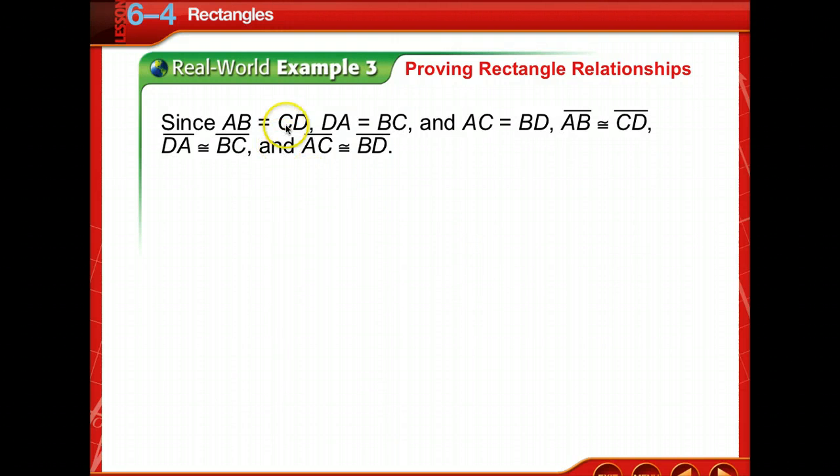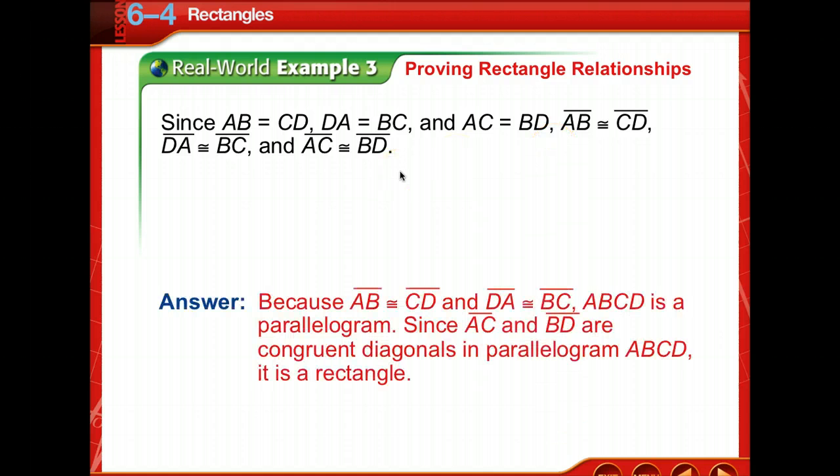Since AB equals CD, DA equals BC, and AC equals BD—meaning each set of sides are equal and the diagonals are equal—we can say those sides are congruent. Because they're congruent, ABCD is a parallelogram. Since AC and BD are congruent diagonals in parallelogram ABCD, it is a rectangle.